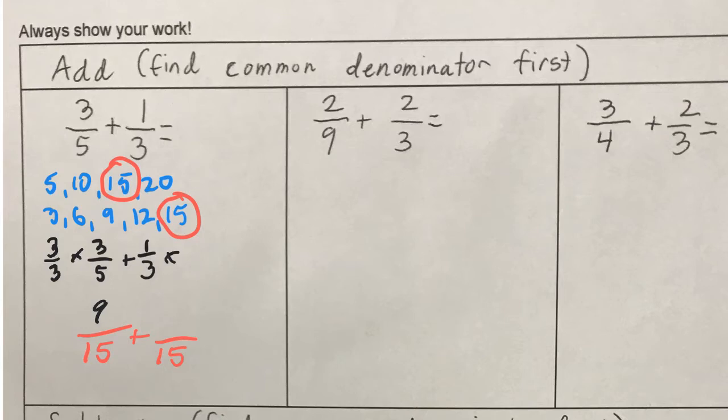Over here, 3 times what gives me 15? That's going to be 5 fifths. So, 1 times 5 on the top is 5. And now we can add those together. 14 fifteenths. Looking over at the next one.